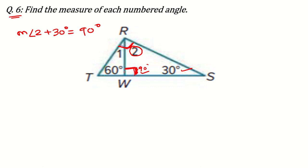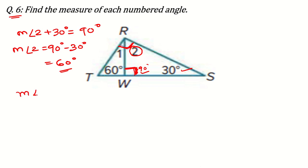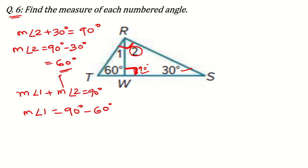The total angles in a triangle should be equal to 180 degrees. So the measurement of angle 2 plus 30 degrees equals 90 degrees, meaning angle 2 equals 90 minus 30, which is 60 degrees. Then angle 1 plus angle 2 equals 90 degrees, so angle 1 equals 90 minus 60, which is 30 degrees.